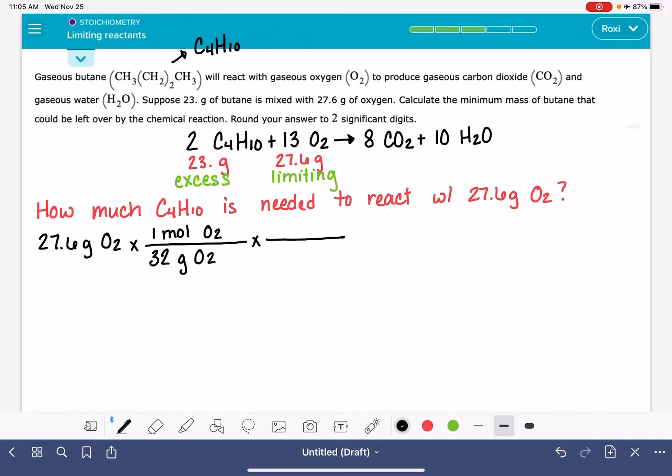And then once we get that done, we are going to convert from moles of O2 into moles of butane, C4H10, using their stoichiometric coefficients. And then once we get that done, we are going to convert from moles of butane into grams of butane using the molecular weight.